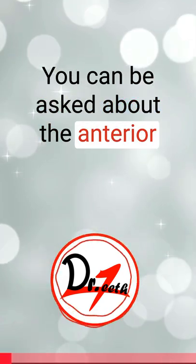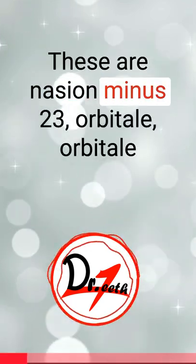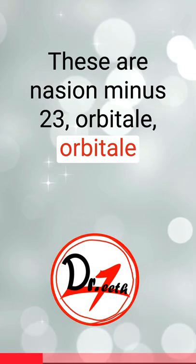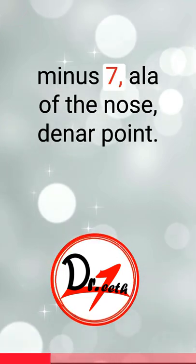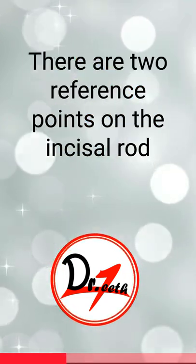You can be asked about the anterior reference points. These are nasion minus 23, orbitale, orbitale minus 7, ala of the nose, and the denar point.